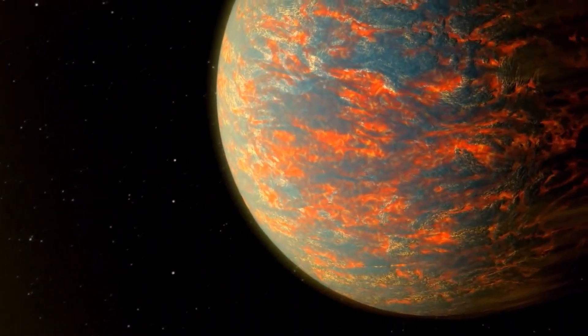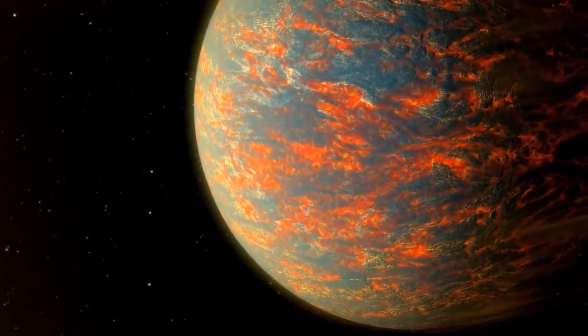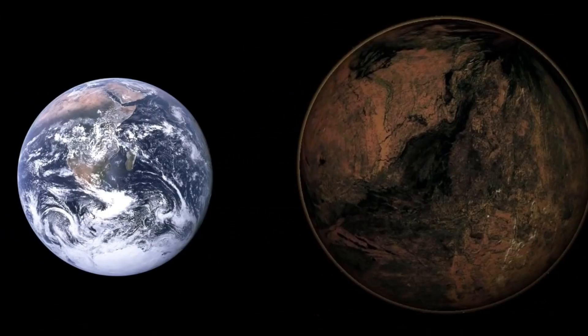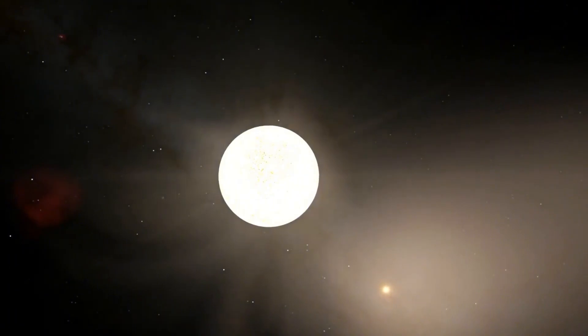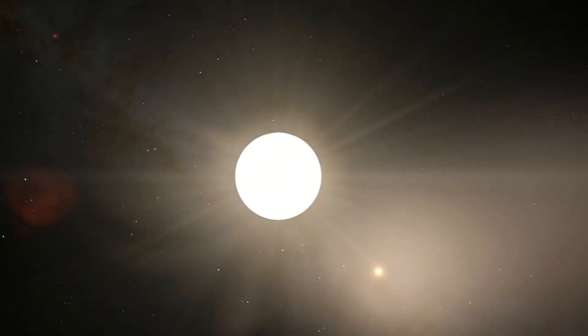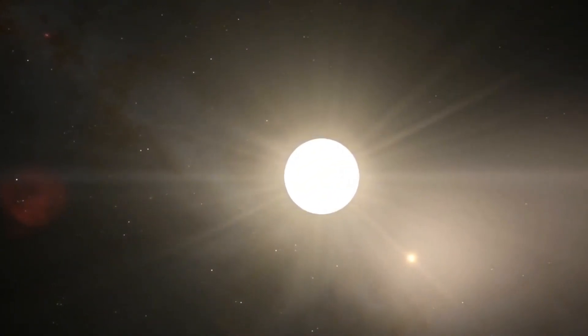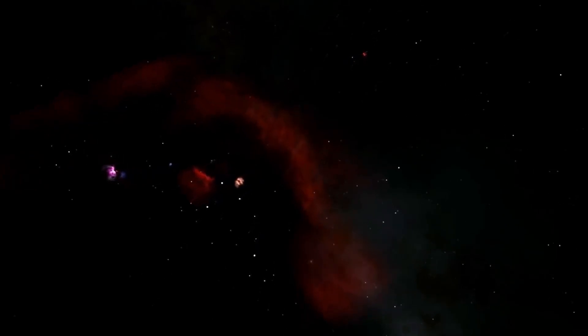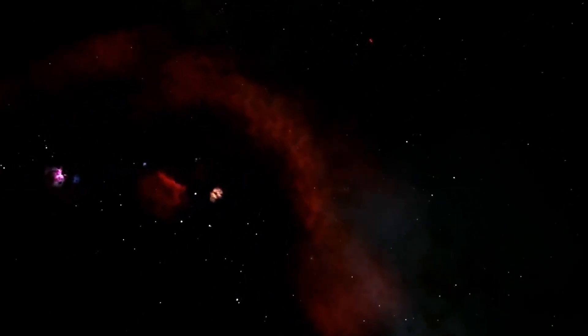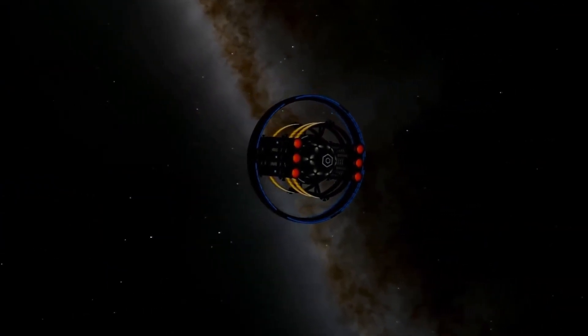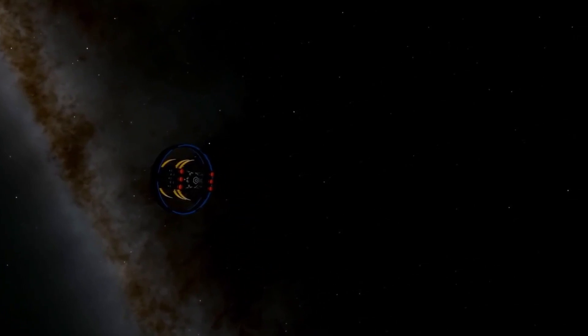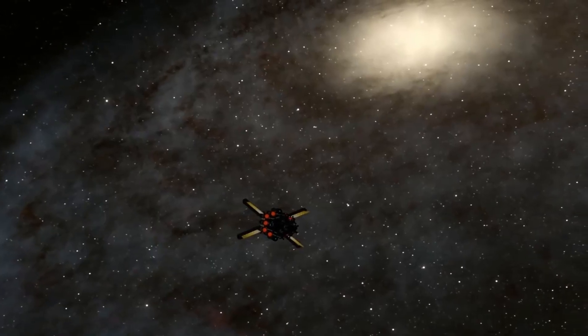55 Cancri e is what astronomers call a super-Earth. It's about twice the size of our planet, but eight times as massive. And it orbits its star in just 18 hours. But that's not the interesting part. Based on the planet's mass, radius, and the composition of its star, scientists think up to a third of 55 Cancri e could be made of diamond.